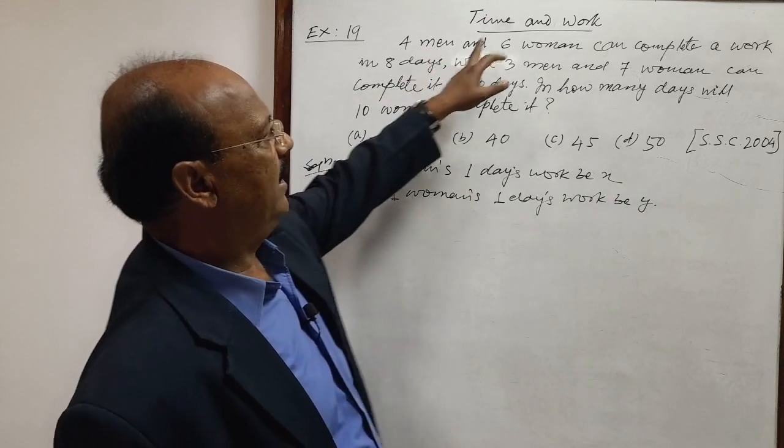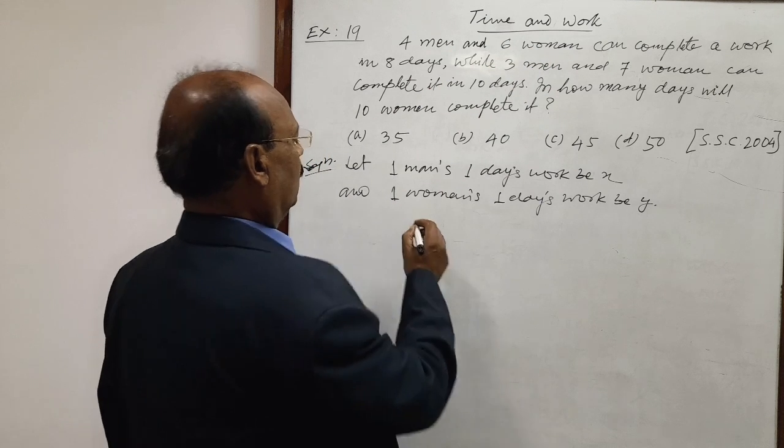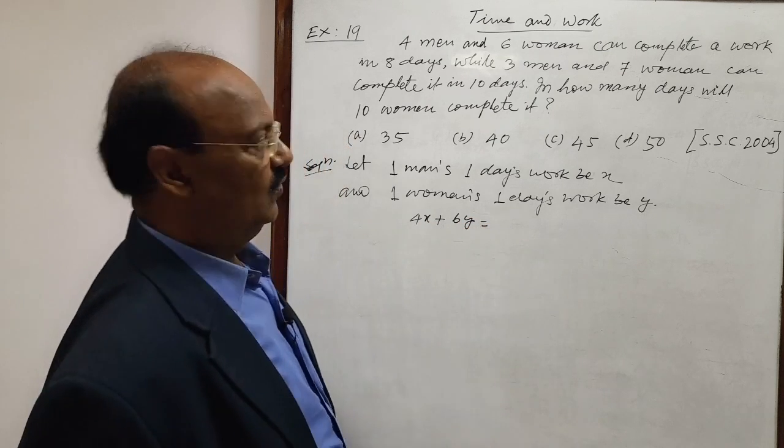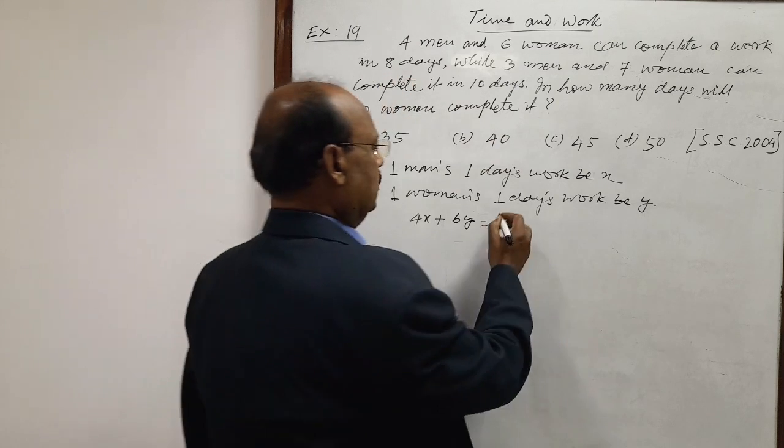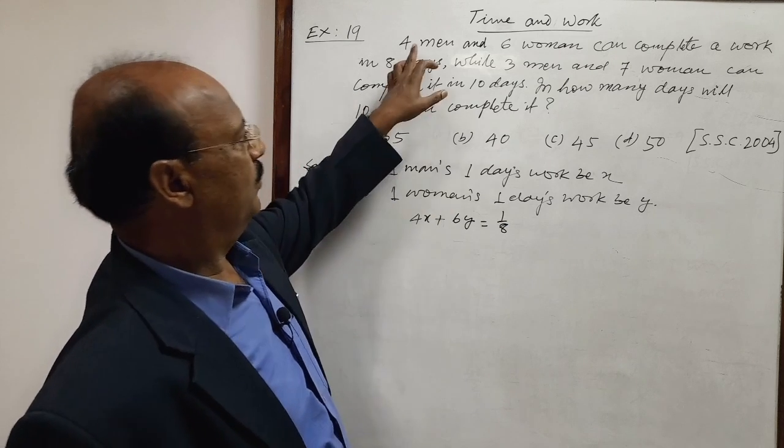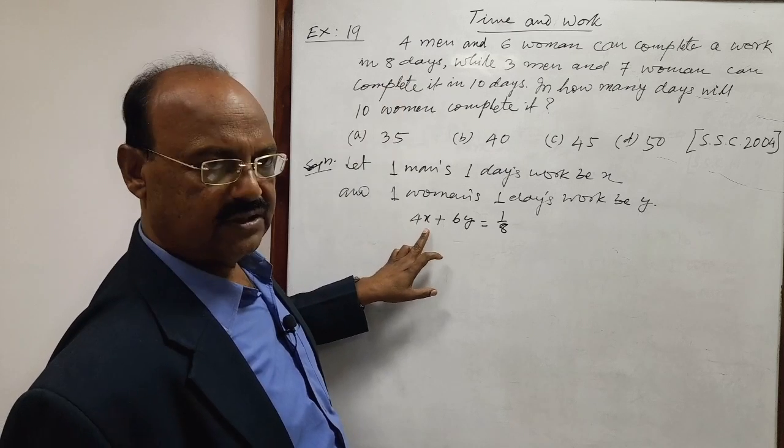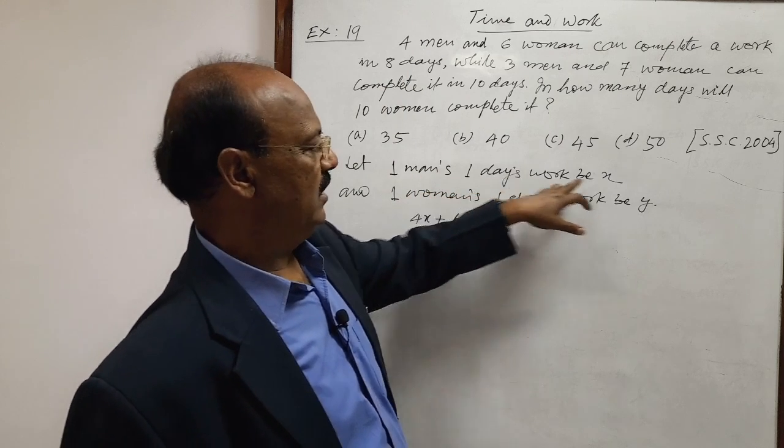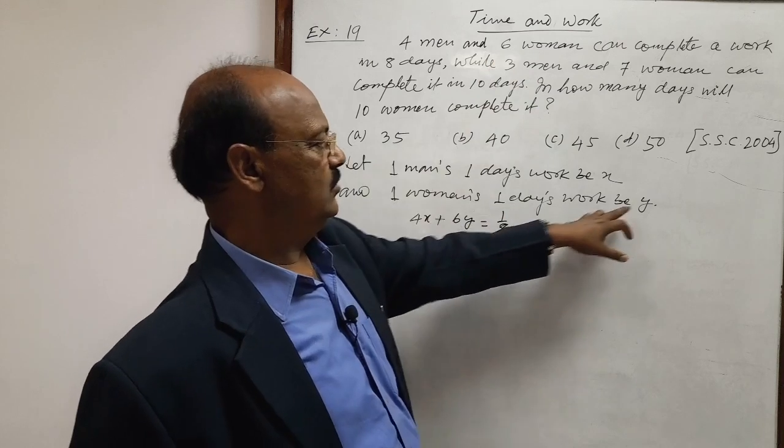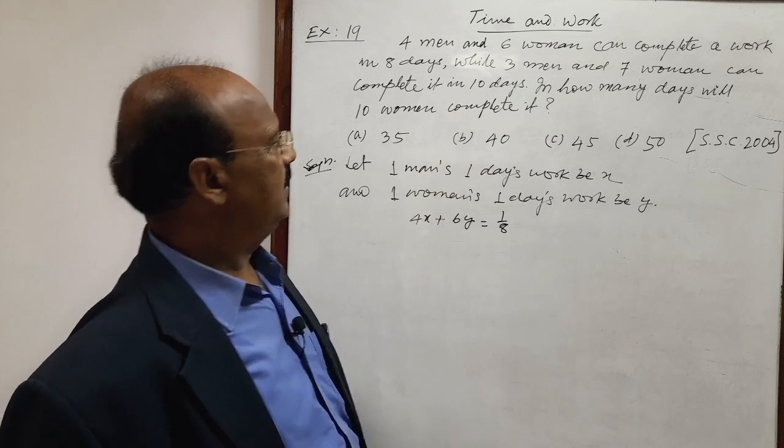In the first case, four men and six women are working together. So equation will be 4x plus 6y is equal to, the work will be completed in eight days, so this will be one by eight. Try to understand it. How four x? Four men are working for eight days. One man's one day's work is x, so four men's work will be 4x. Women's one day's work is y, so six women's work will be 6y.